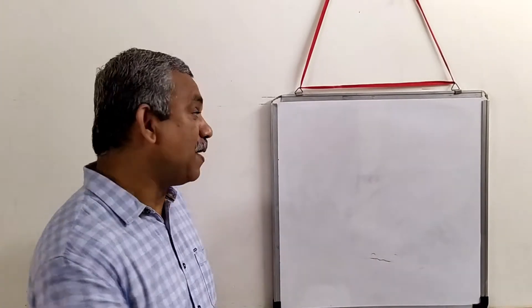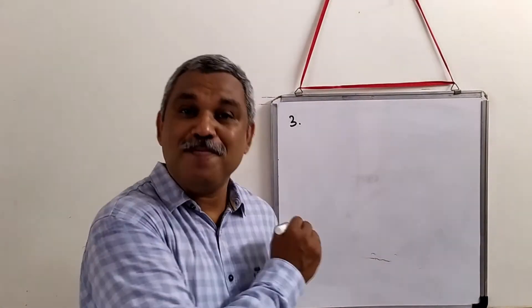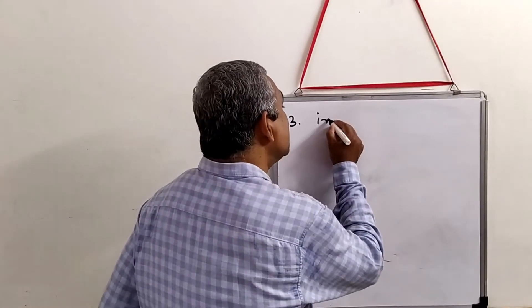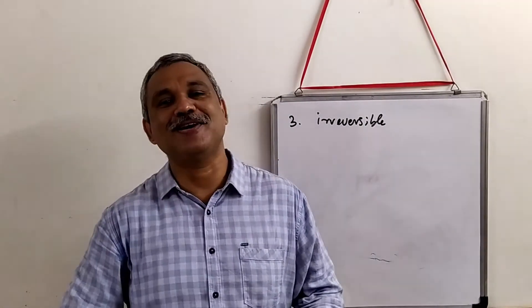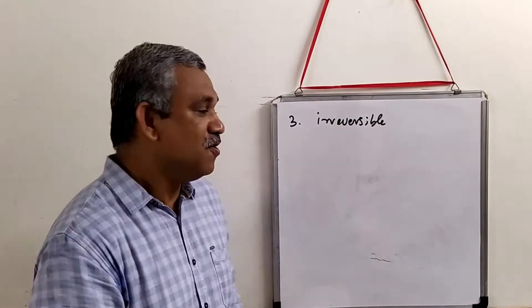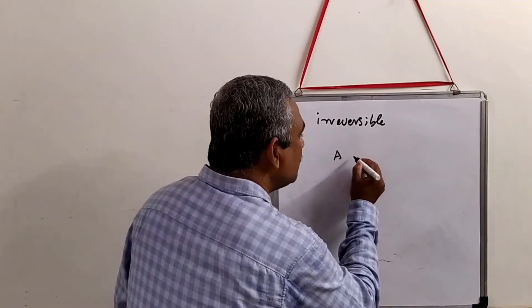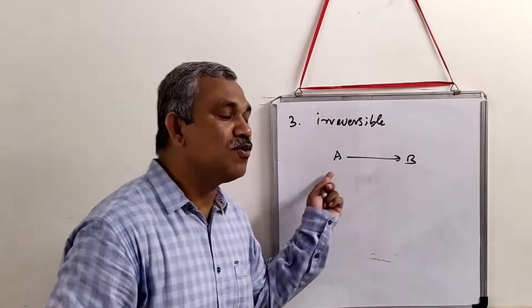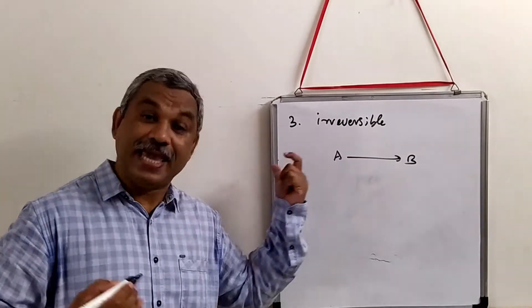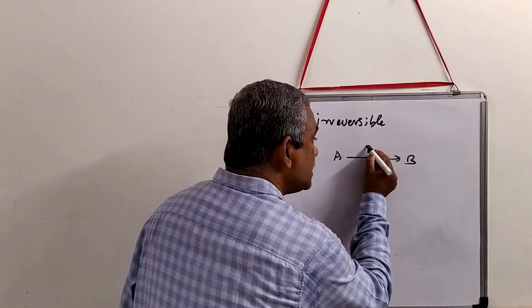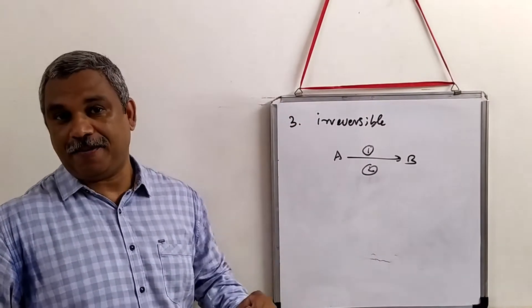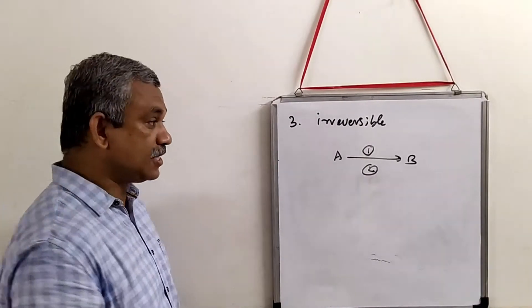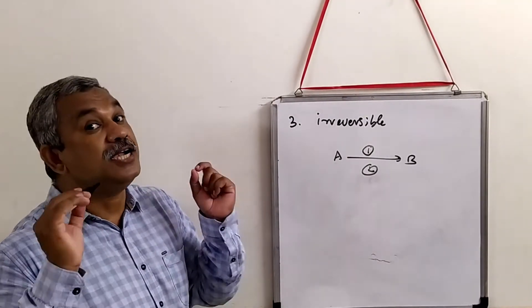The third general feature of metabolic pathways is that all metabolic pathways are irreversible. You cannot reverse a metabolic pathway. For example, if you convert A into B, you cannot convert B back into A through the same route.